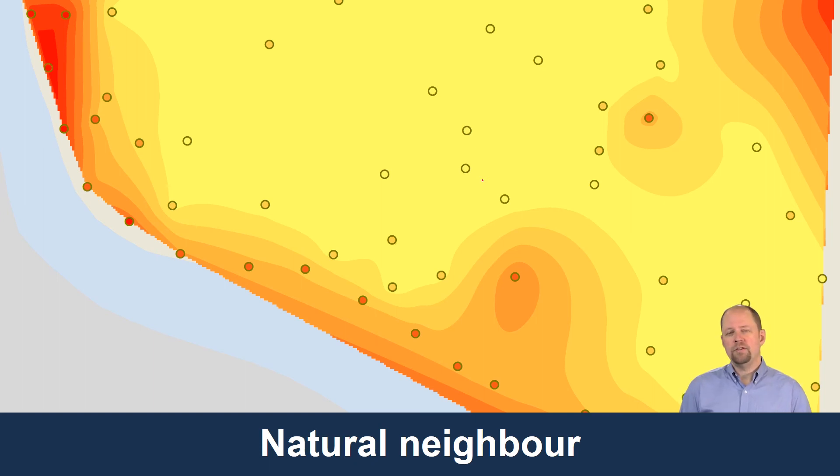One other thing to mention: when it's doing these calculations, it's only using the points that are nearby. It's the points directly closest to it that are being used to create these new Thiessen polygons. Because it's not using all of the sample points for each calculation, but only the nearby ones, that makes it a local method of interpolation.